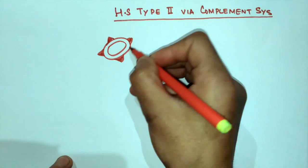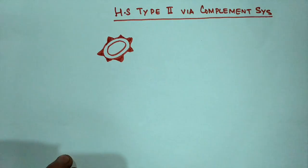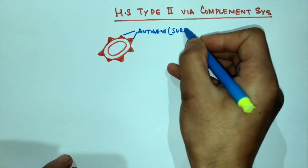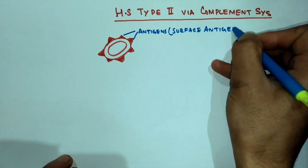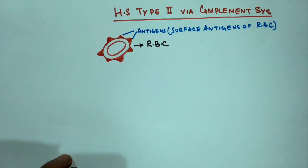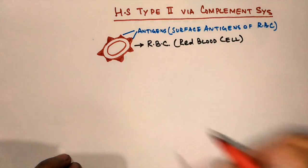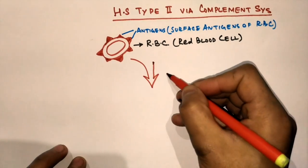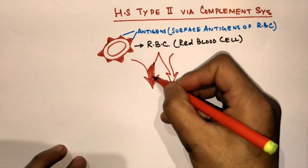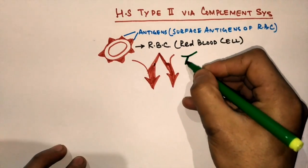This is an RBC — a red blood cell — in our immune system. RBCs have surface antigens that are recognized by the immune system. When there is incompatible blood transfusion, as already mentioned, when this RBC gets into the blood of an incompatible person, these surface antigens are detected and alarmed by IgG antibodies, as shown in the figure.